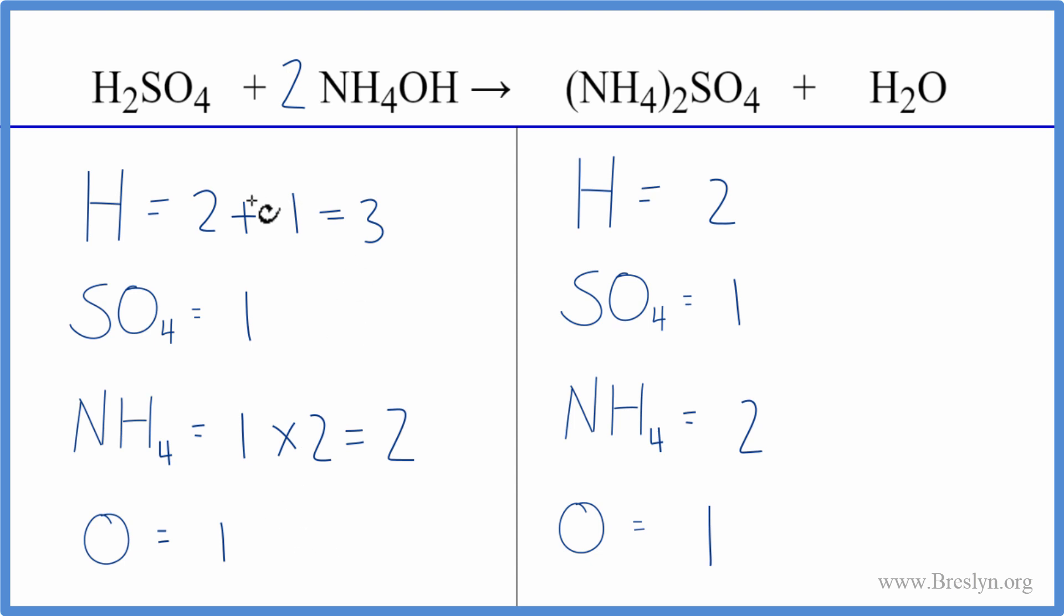And then we need to update our hydrogens and our oxygens. So we have our two hydrogens here, plus we have the one times the two here. So we have four hydrogens now. Now oxygens, we have the one times the two. And we ignore the other ones that are part of the sulfate.